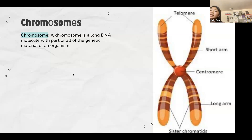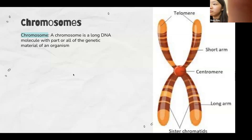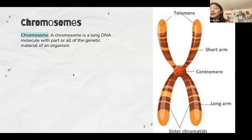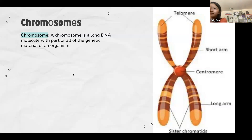DNA has a double helix structure — RNA only has a single helix. Also, RNA doesn't have thymine (T). That's the main structural difference between DNA and RNA.